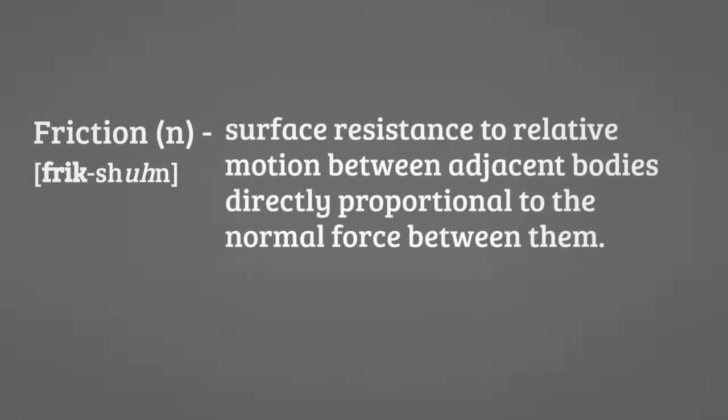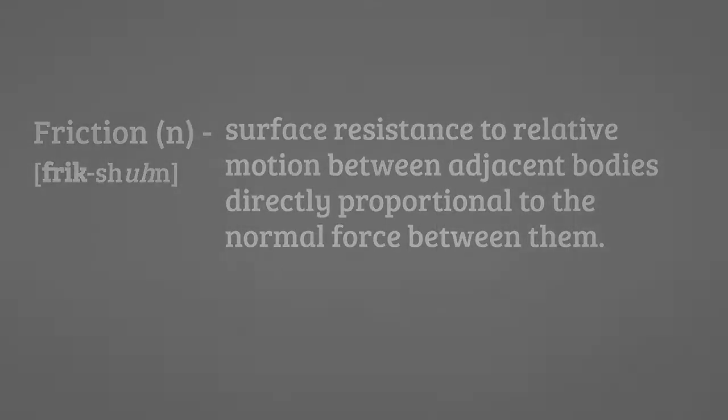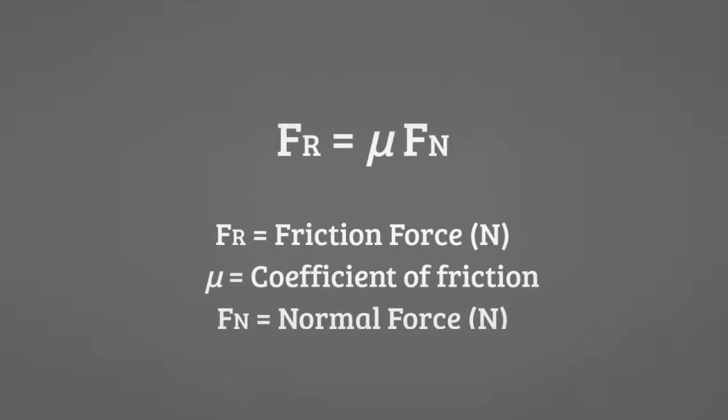Friction is defined as the surface resistance to relative motion between adjacent bodies directly proportional to the normal force between them. Now that's one mouthful. Perhaps taking a closer look at the equation for friction will help. Here we see how the force of friction relates to the normal force. What's that squiggly letter in there, you ask? Why, that's the Greek letter mu. It represents the coefficient of friction. The coefficient of friction relates the magnitude of the normal force to the magnitude of the friction force.